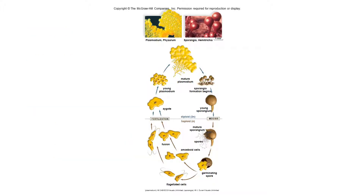Here's the life cycle of slime molds. You've got sporangia formation that will divide by meiosis and make spores, then fertilization, a zygote, a young plasmodium, then a mature plasmodium, then sporangia again, and the cycle continues. You don't have to know details about this.